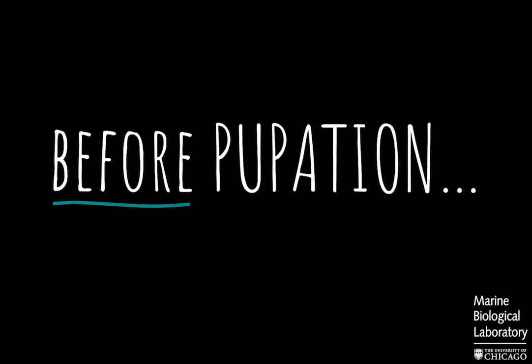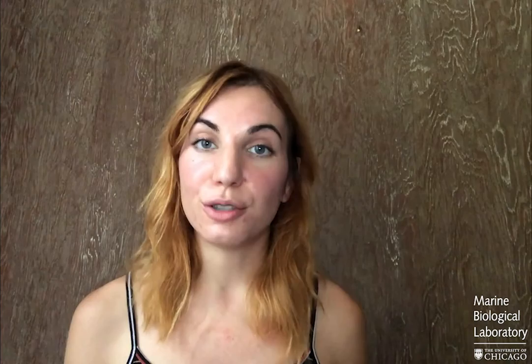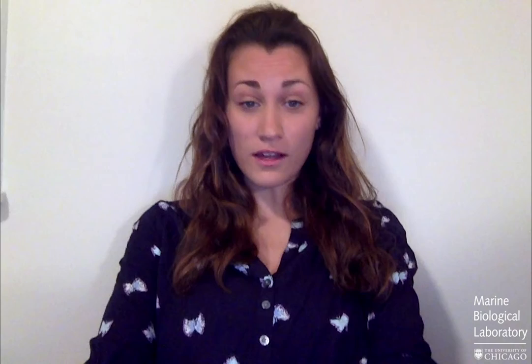Eventually, the caterpillar pupates. The caterpillar sheds its skin similar to a molt before, but instead of exposing a new cuticle layer, it exposes a chrysalis. The pupa is the inactive form between the larva and the adult. Many of you know this as the chrysalis, which is a butterfly pupa, or in moths it is referred to as a cocoon, which is a protective silky layer that encases the moth pupa.